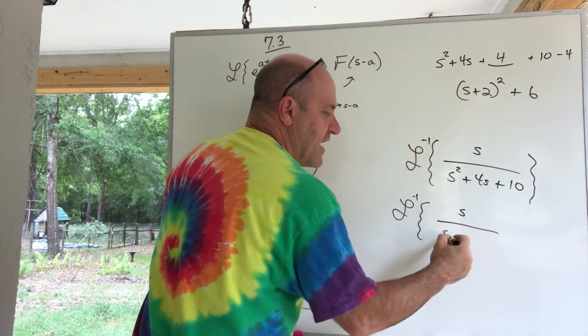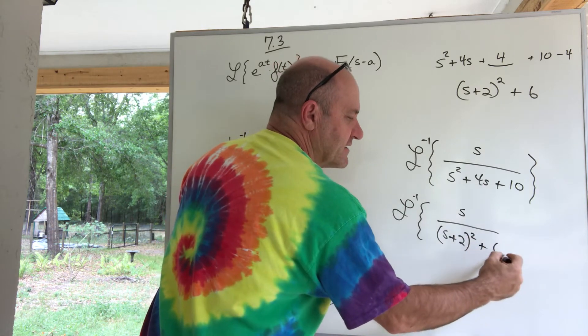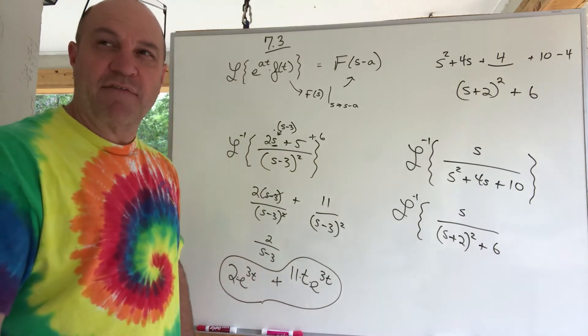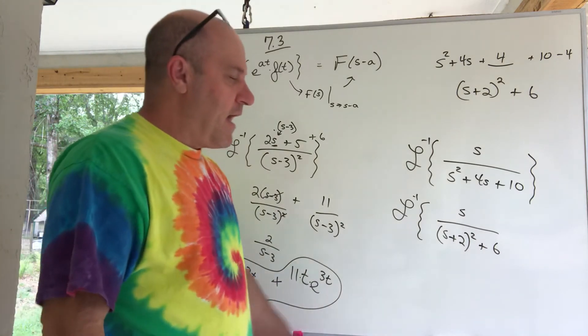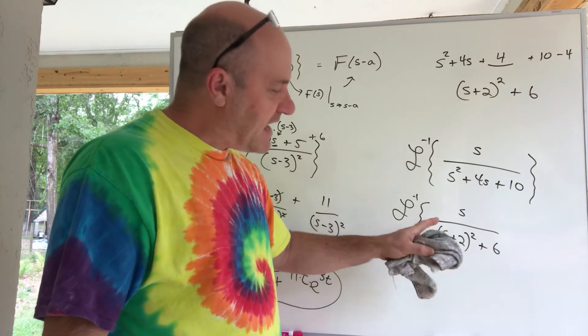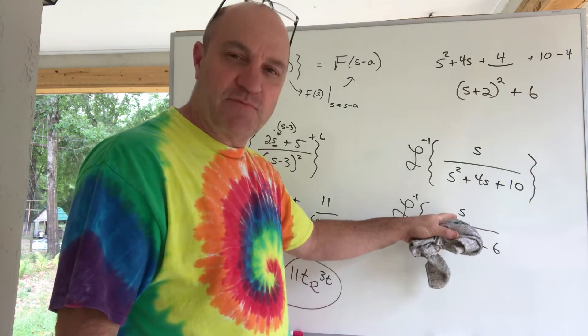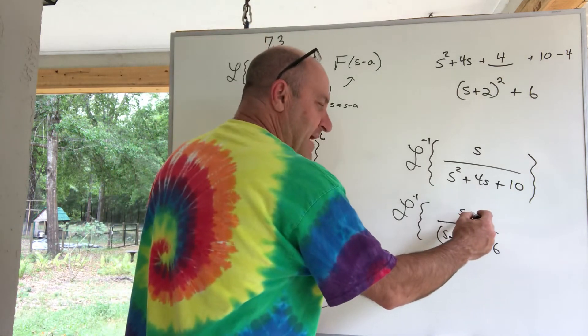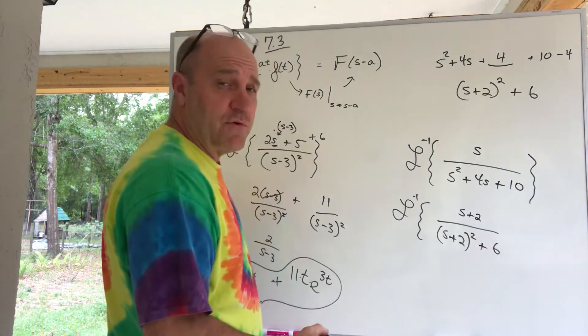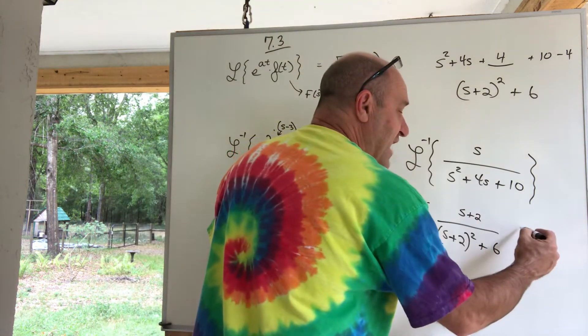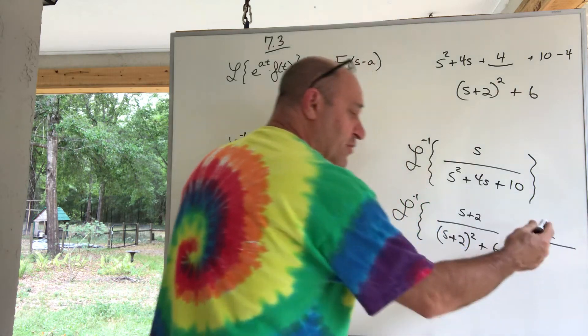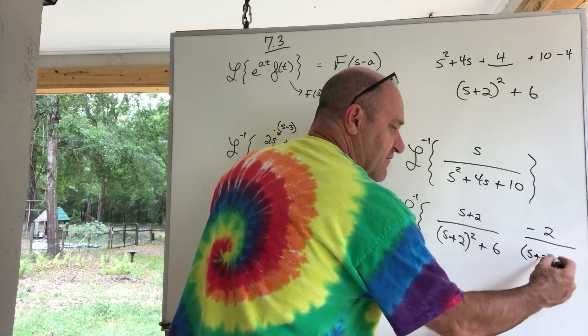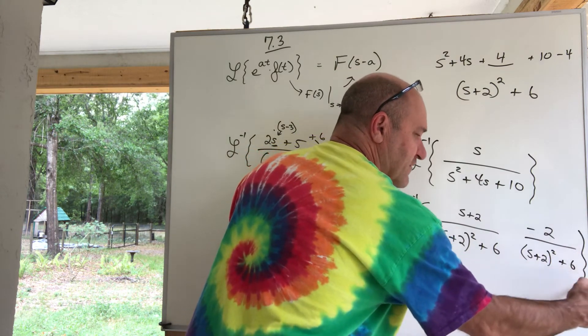So, you've transformed this problem now into this problem. An s over s plus 2 squared plus 6. All right, that kind of a denominator, that looks like a cosine or a sine. I think I've got these things memorized kind of well. Oh, but if that's an s plus 2, then that needs to be an s plus 2. Well, then I can make that happen. I can make that, I can add a 2. I can make that an s plus 2 as long as I go over here and subtract a 2. And I'm going to subtract a 2 and I'm going to put it over its own denominator because now these are two separate Laplace inverses. These are two separate Laplace inverses.